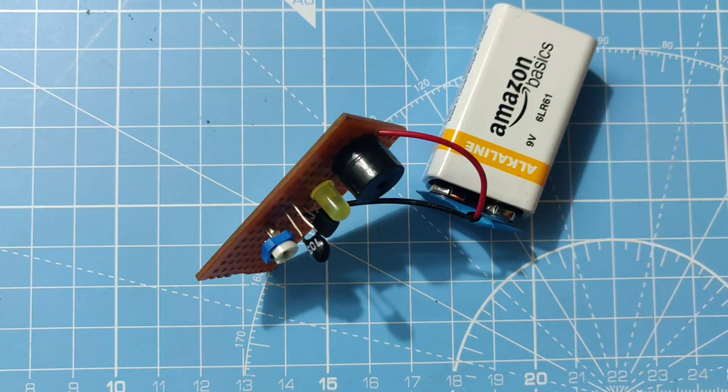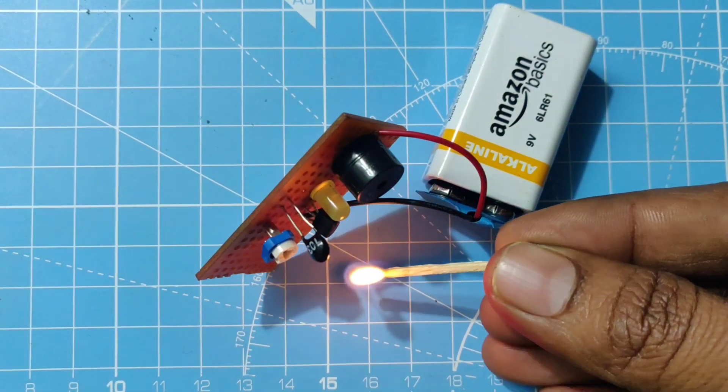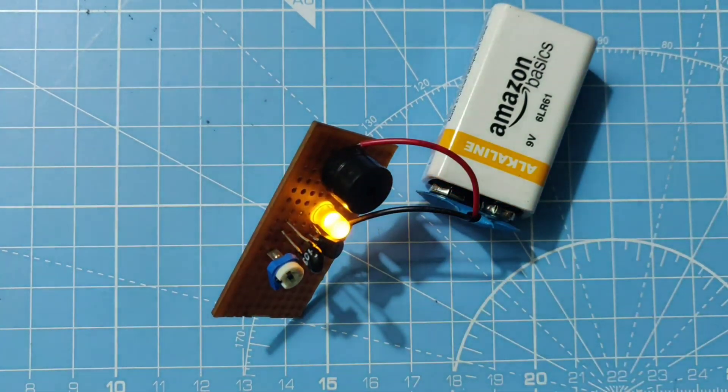Connect any heat element or any small fire near to the thermistor, the LED and buzzer will switch on.